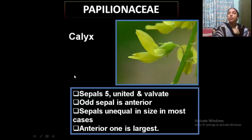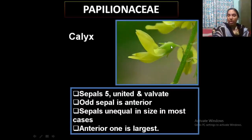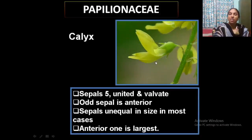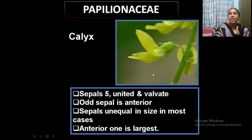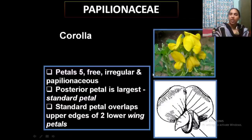The calyx is the green-colored part. Sepals are of different sizes, usually valvate in aestivation. The odd or anterior sepal is the larger one, while the other petals are smaller, so they are usually unequal.